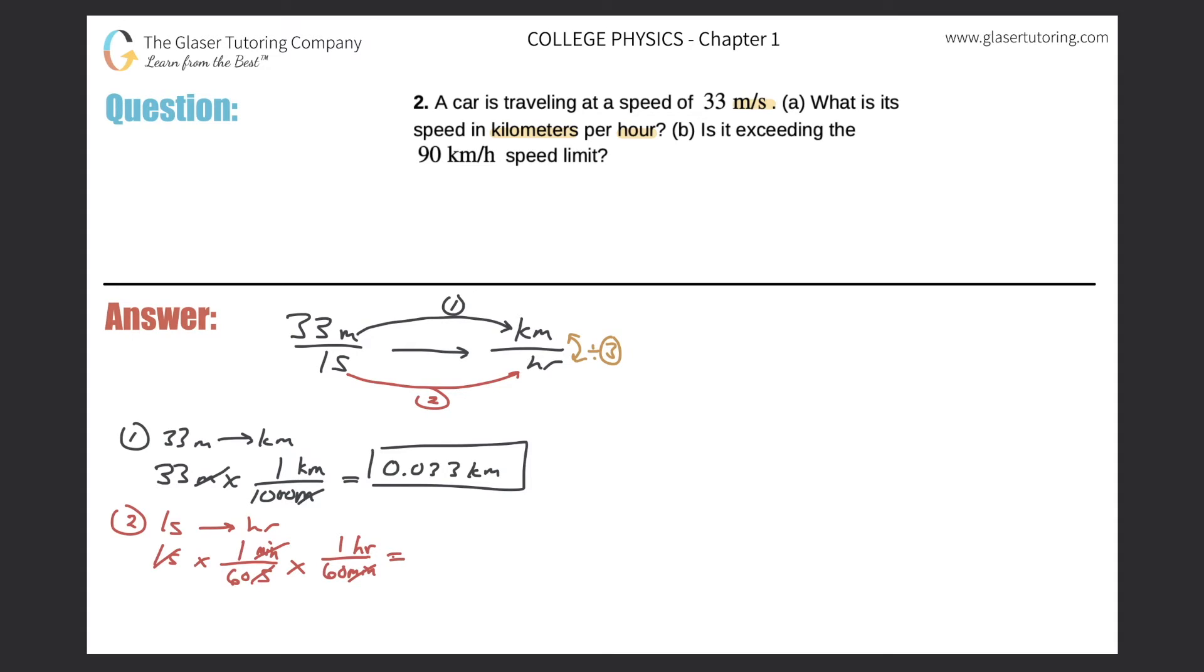So now I'm left with hours. I have to take the value of 1 and divide it by 60 times 60. So that comes out to about 2.8 times 10 to the minus 4 hours. That's the answer to the second part.